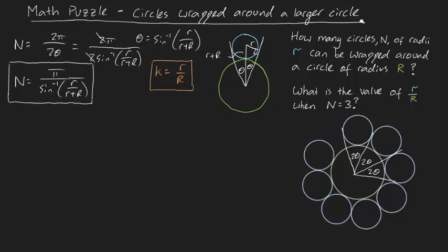Notice that we can now write N as π divided by arcsin of, well if you divide both the numerator and denominator by R you're going to get k/(k+1). That's another way you can write N.